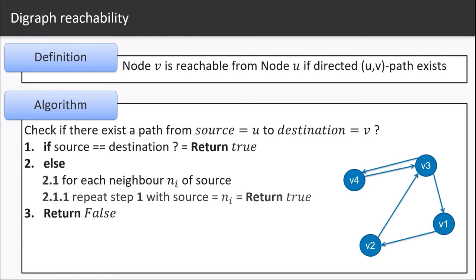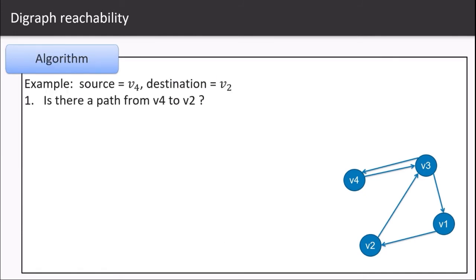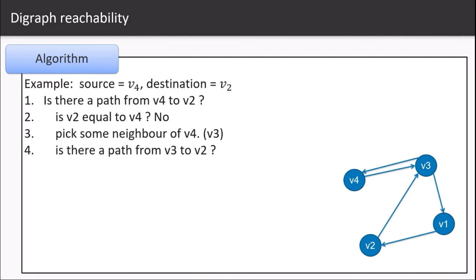Let us look at the example from v4 to v2. Is there a path from v4 to v2? Is v2 equal to v4? No. Pick some neighbor of v4, let's say we pick v3. Is there a path from v3 to v2? Is v2 equal to v3? No.